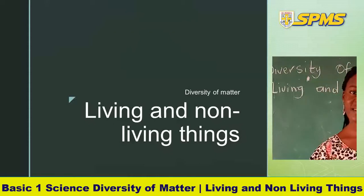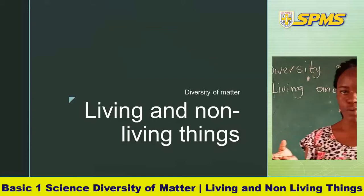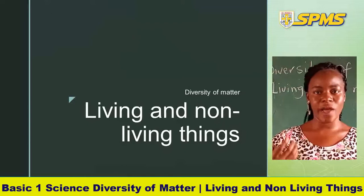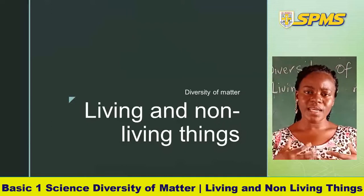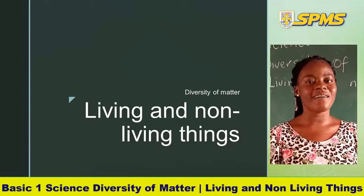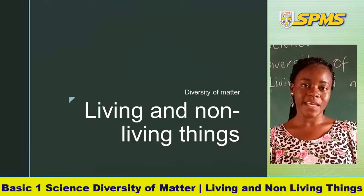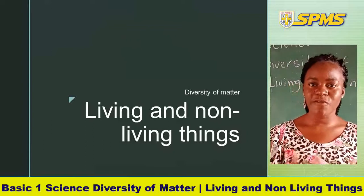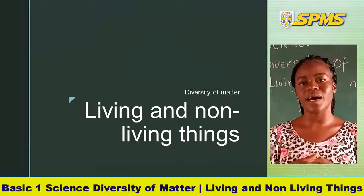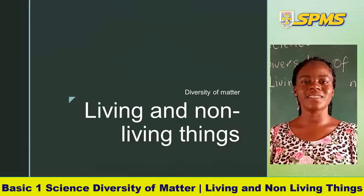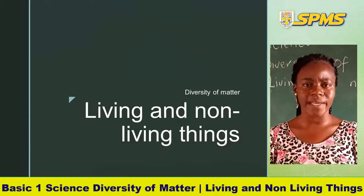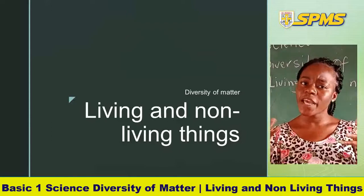A plant needs water and air in order to grow, but a chair does not need water, air, or food to grow. And the last difference: living things have a life span — they have a time that they will leave the earth, therefore they are mortals. On the other hand, non-living things do not have a life span, so they are immortal.